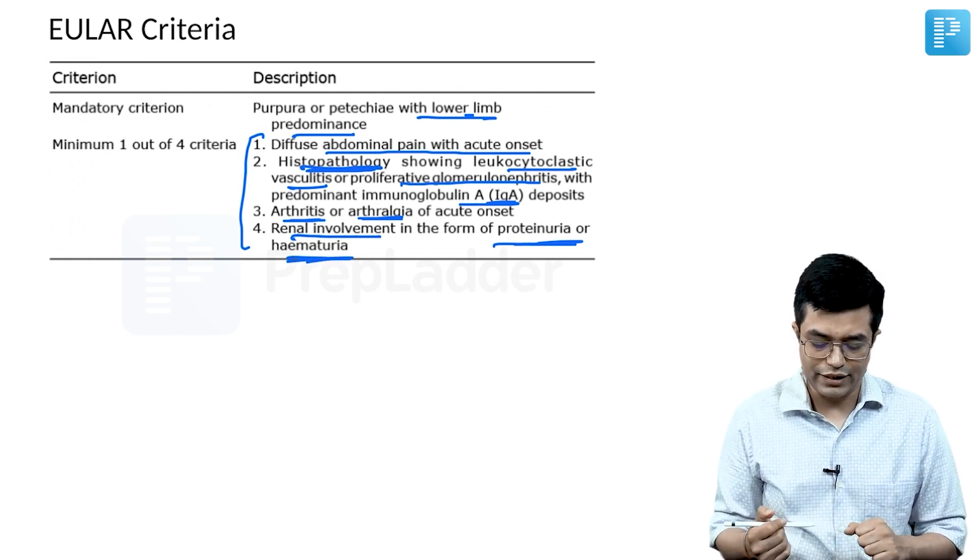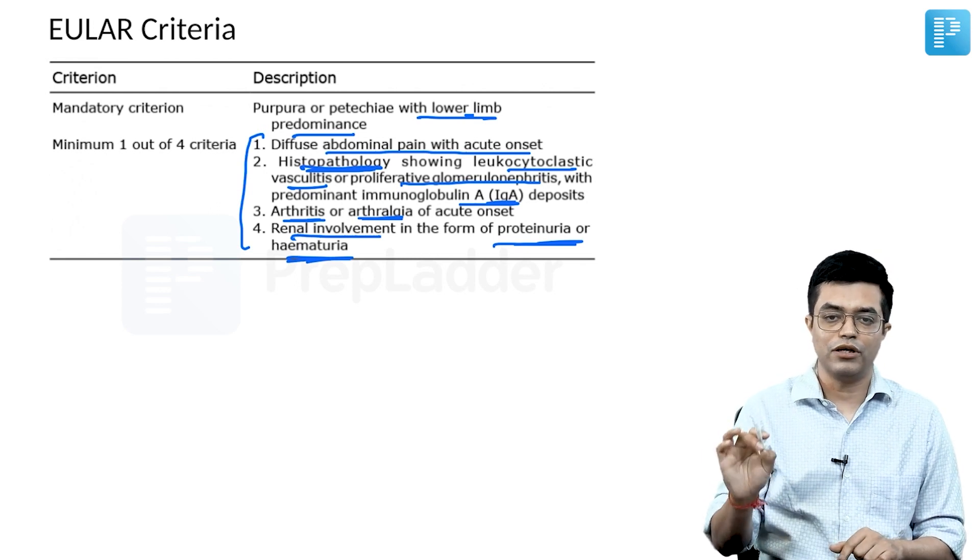In this child, the diagnostic criteria are being fulfilled, so the child is having Henoch-Schönlein Purpura.